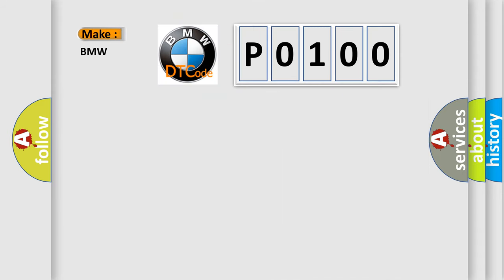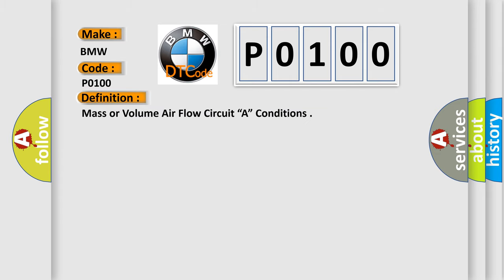So, what does the Diagnostic Trouble Code P0100 interpret specifically for BMW car manufacturers? The basic definition is mass or volume air flow circuit A conditions.